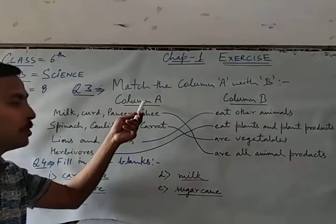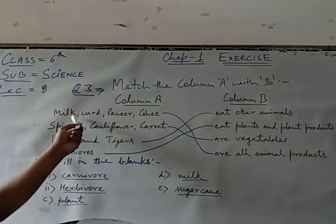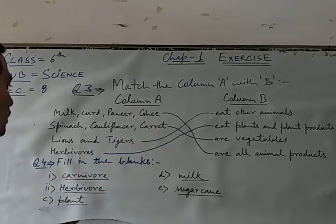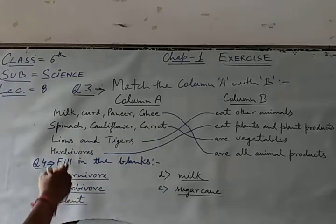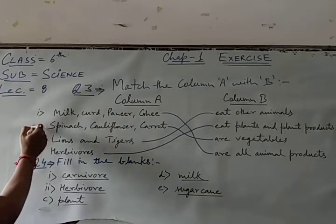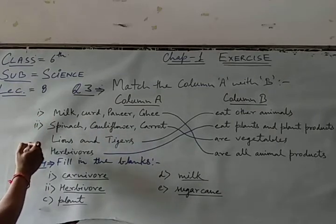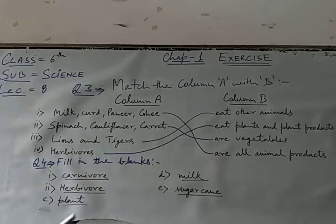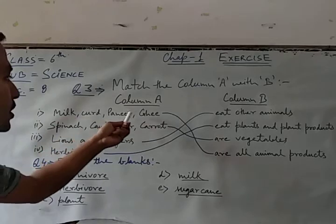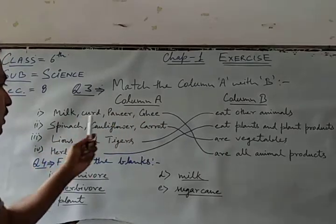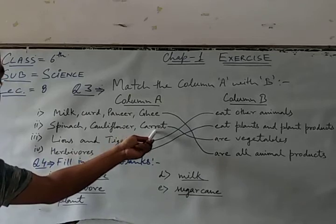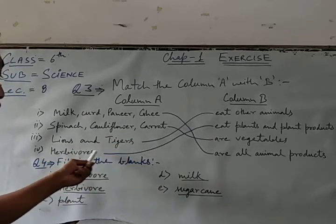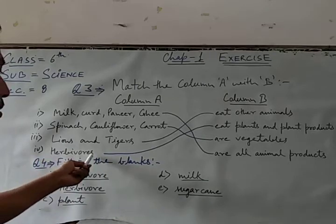The column A: milk, curd, paneer, ghee. Second name spinach, cauliflower, carrot. Third name lions and tigers. Fourth name herbivores.